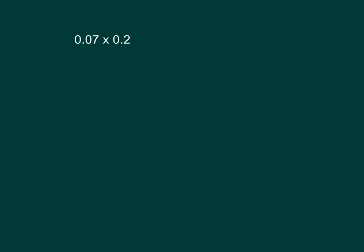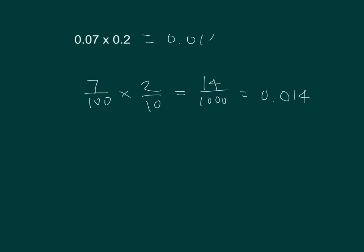Fourteen-thousandths. One last problem: seven-hundredths times two-tenths. Written out in fraction form, that gives fourteen-thousandths, written as the decimal 0.014. So we can relate decimals and fractions through these multiplication expressions.